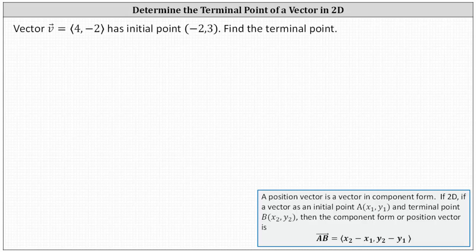We're given vector v has an x component of four and a y component of negative two, with initial point negative two comma three. We're asked to find the terminal point. Let's first take a look at this graphically. Let's graph vector v in standard position and plot the point negative two comma three.